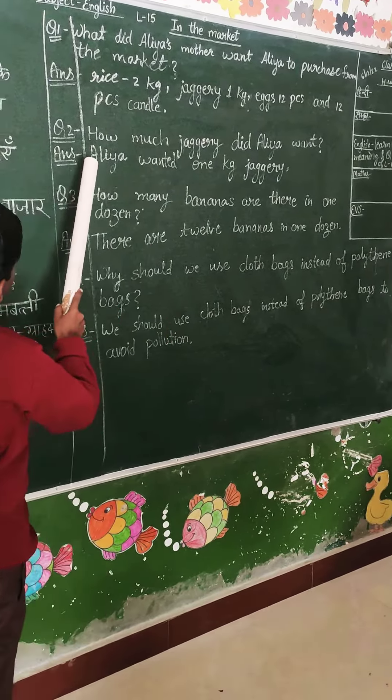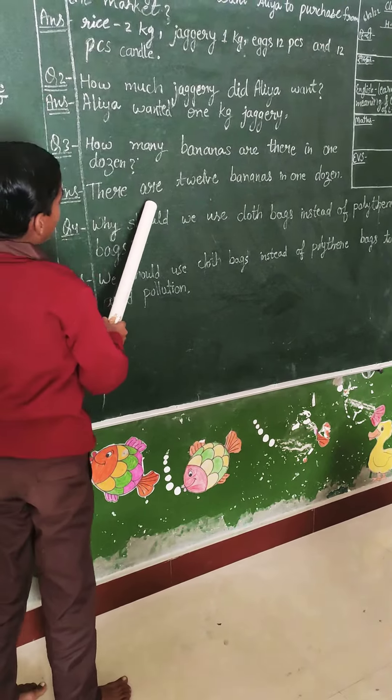Question number 2. How much jaggery does Aria want? Answer: Aria wanted 1 kg of jaggery.